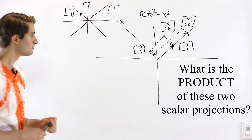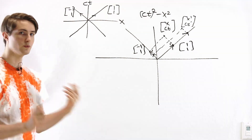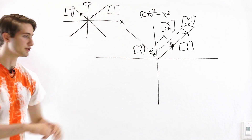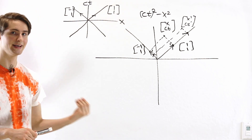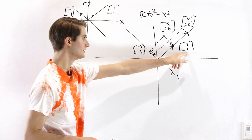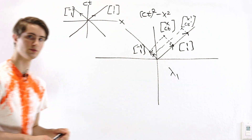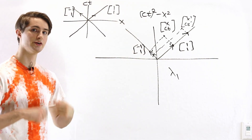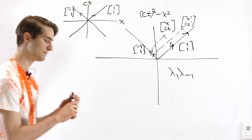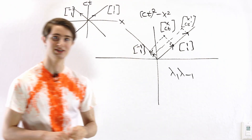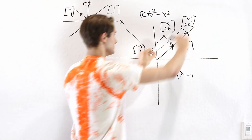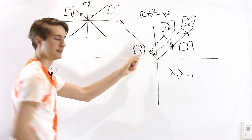The question is: what is the product of these two scalar projections after transformation? For the first vector projection along (1,1), when we apply the linear transformation, it gets scaled by the eigenvalue of (1,1) — let's call that lambda₁. For (-1,1), it's also an eigenvector, so it gets scaled by its eigenvalue — let's call that lambda₋₁. The product of the scalar projections after transformation is going to be the original product times lambda₁ times lambda₋₁.